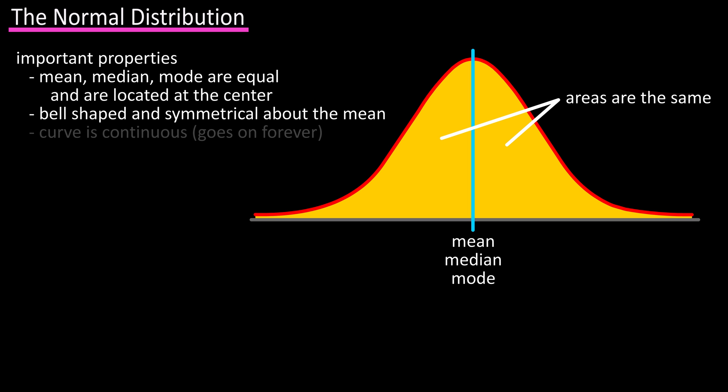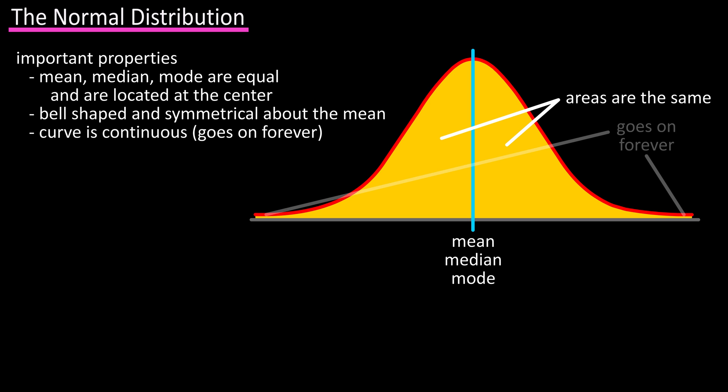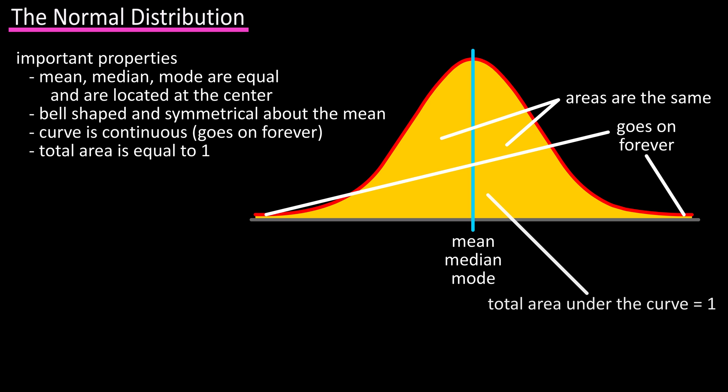Number three is that the curve is continuous, meaning that it goes on forever and never touches the x-axis. Number four is that the total area under the normal distribution curve is equal to one. This may seem wrong, as the curve never touches the x-axis, but it can be proven using calculus, which we're not going to do in this video.